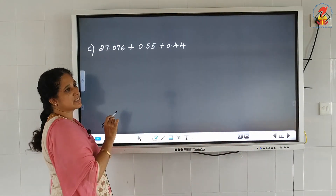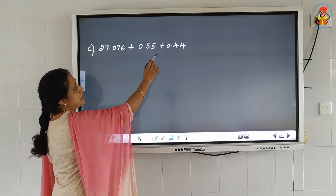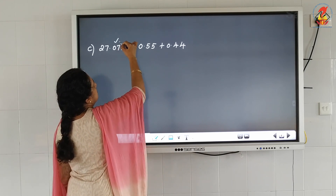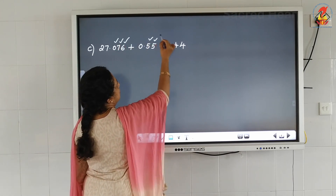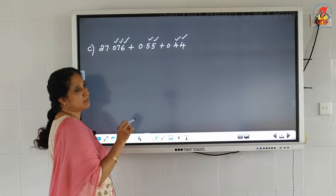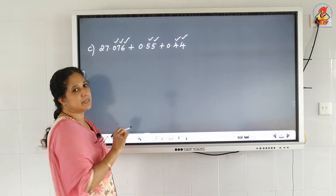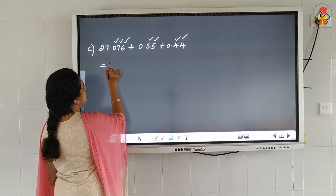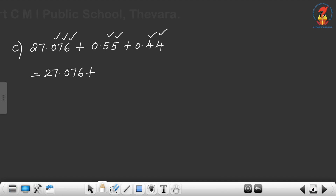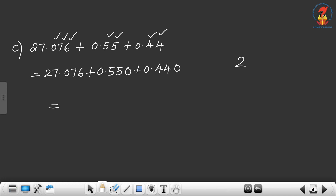Next: 27.076 plus 0.55 plus 0.44. Count the number of decimal places: 3 decimal places, 2 decimal places, and 2 decimal places. The maximum number of decimal places needed is 3, so we write: 27.076 plus 0.550 plus 0.440.